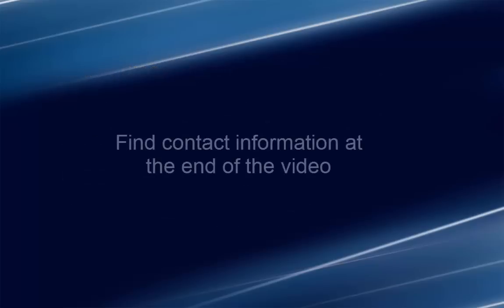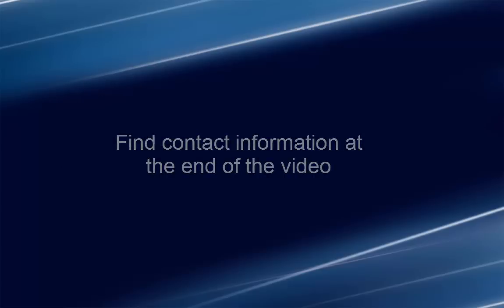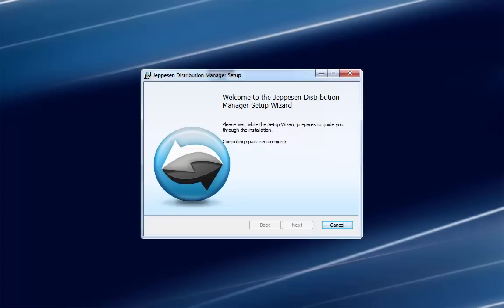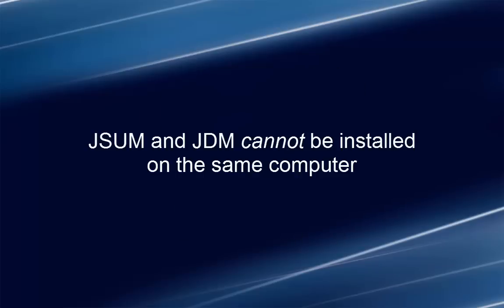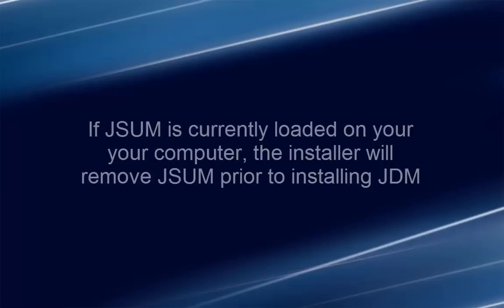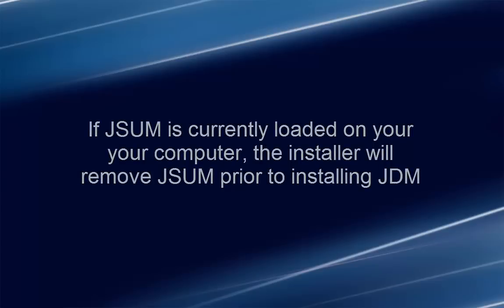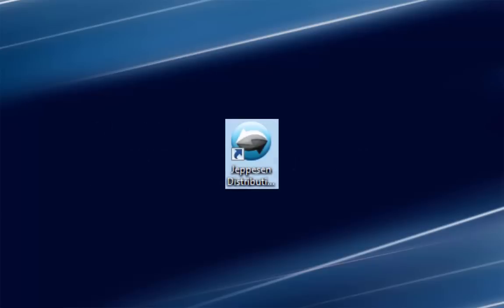We'll wrap up with a list of resources and support contact information. An installation wizard will step you through the process. If you currently use JSOM, note that JSOM and JDM cannot be installed on the same computer. If JSOM is currently loaded on your computer, the installer will remove JSOM prior to installing JDM. Instead of the JSOM program icon on your desktop, you'll see the JDM icon.